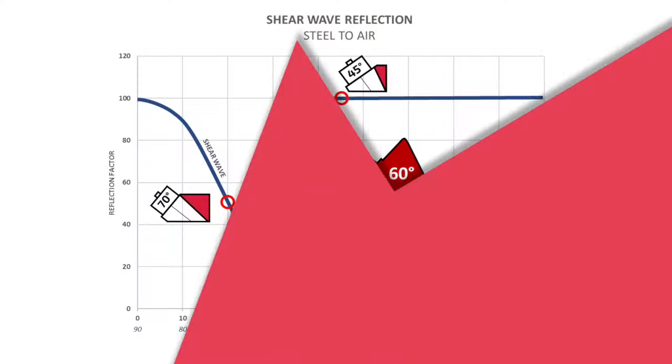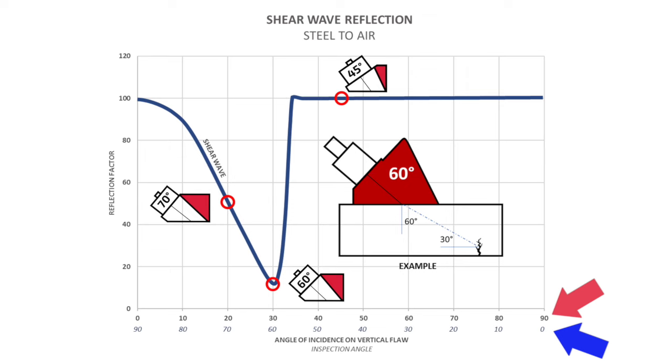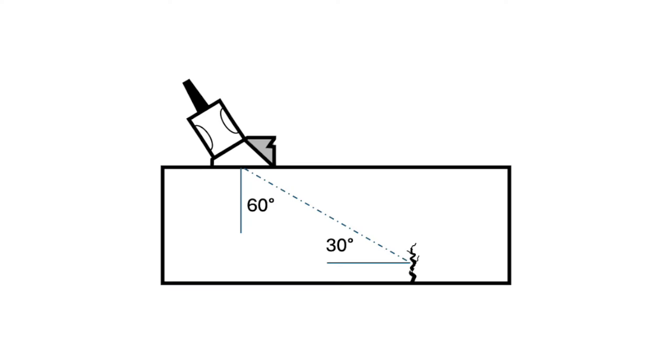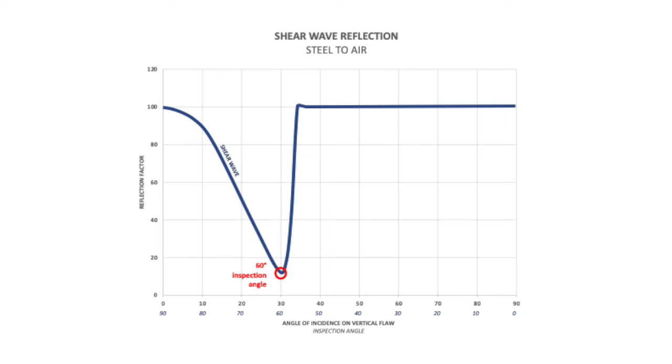Above that is the incident angle on a vertical flaw. If you are shooting at 60 degrees and you have a vertical flaw, like a notch in a block, what's happening is even though your beam is at 60 degrees, you're actually hitting that flaw at 30 degrees. And we get a really weak shear wave return at that angle — because most of the shear wave is converting into long waves.